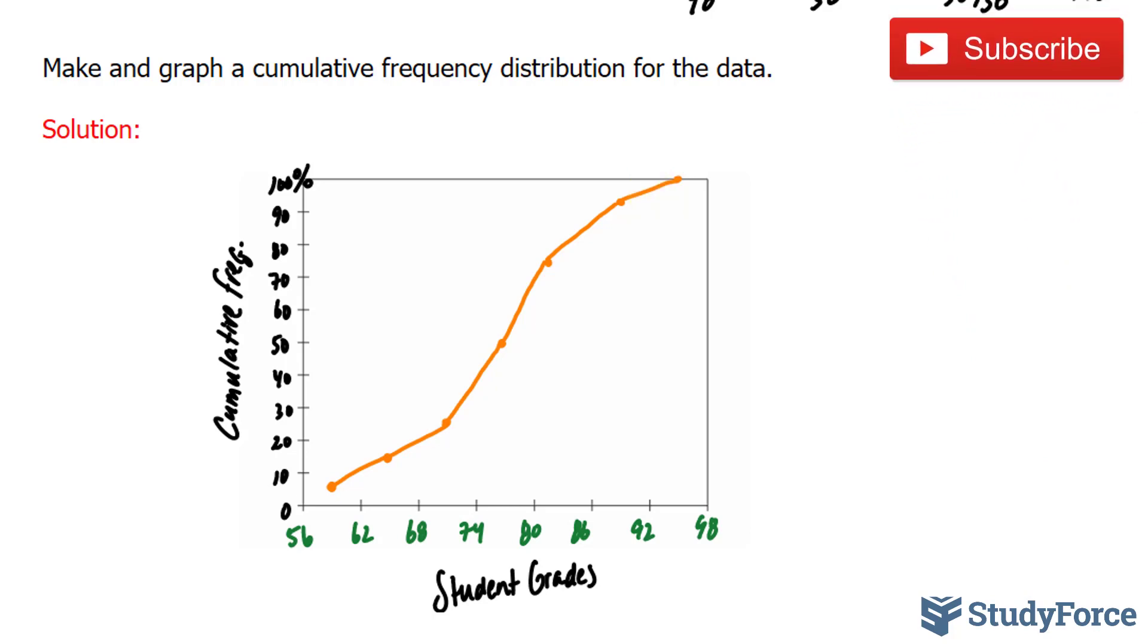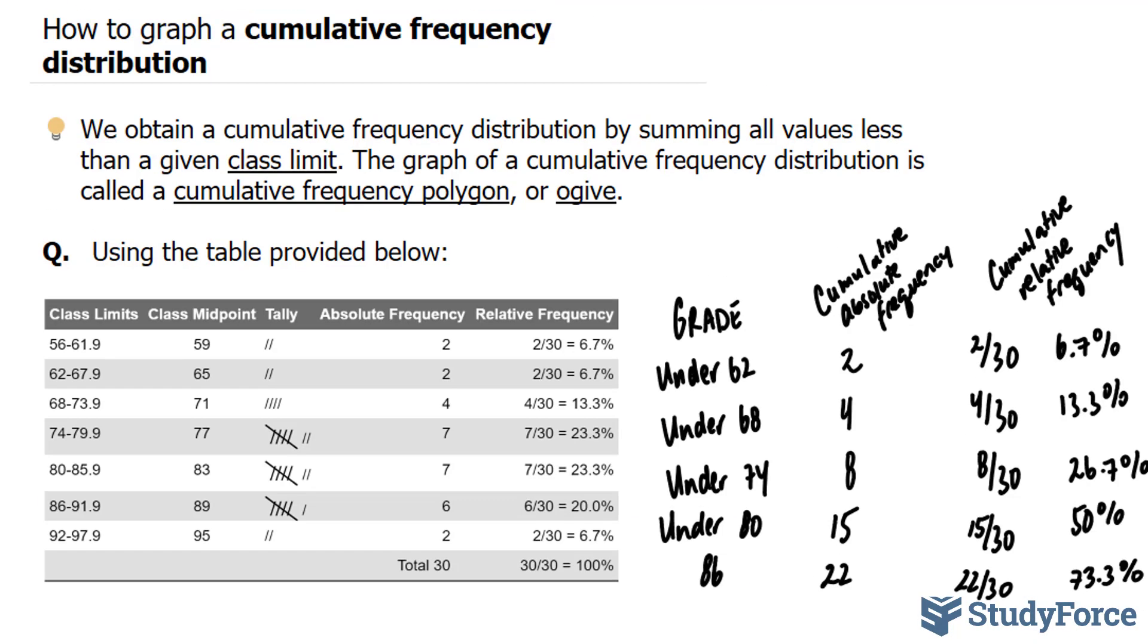One more thing that I want to incorporate is the number of students. I know that there were two students under 62. So I'll write down, over here, this represents 2. So I'm going to use this vertical to write down the amount of students. So I'll use intervals of 3, 9, 12. Because I know that at 30, all 30 students scored less than 98. And so there you have it. That is how to create a cumulative frequency distribution.